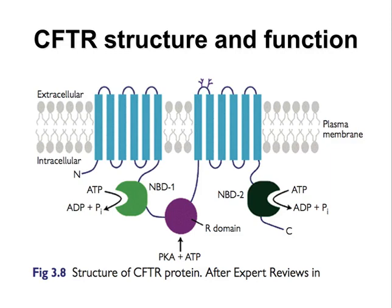The protein has five domains: two membrane spanning domains, each connecting to a nucleotide binding fold in the cytoplasm, and a single regulatory R domain. The function of the gene is that it is a chloride channel which is activated by phosphorylation of the R domain and binding of ATP. Activation results in opening of the chloride channel and closure of the sodium channels. Loss of function results in decreased secretion of chloride and increased resorption of sodium.